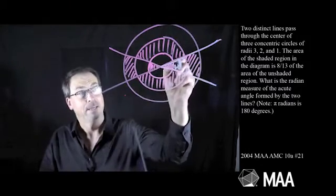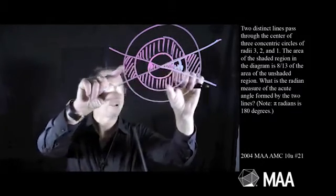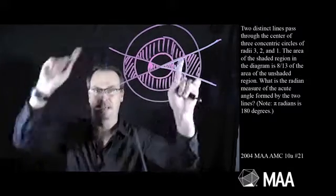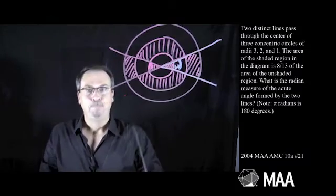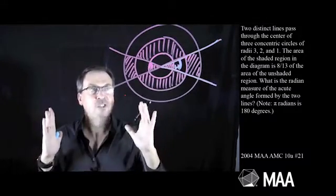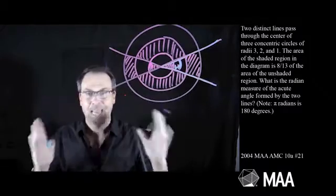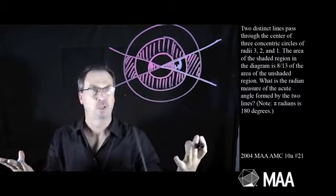Alright, so we want this angle measure in radians, given that the shaded stuff has area 8/13 of the unshaded stuff. Alright, okay, there are definitely pieces I can do. I can at least do something. So let's just engage in strategy number 1, which is engage in successful flailing. Let's just do things that seem right to this question.